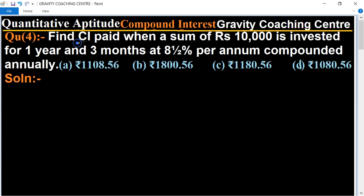So find the compound interest on a sum of Rs 10,000 for 1 year and 3 months. Given: